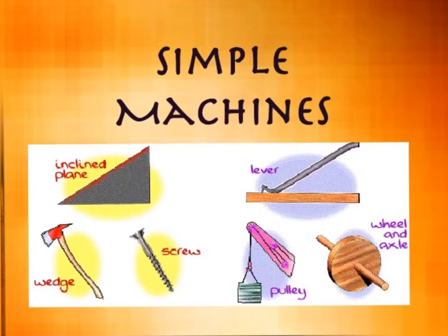There are six classically identified simple machines, and those include levers, wheel and axle, pulley, inclined plane, wedge, and screw.